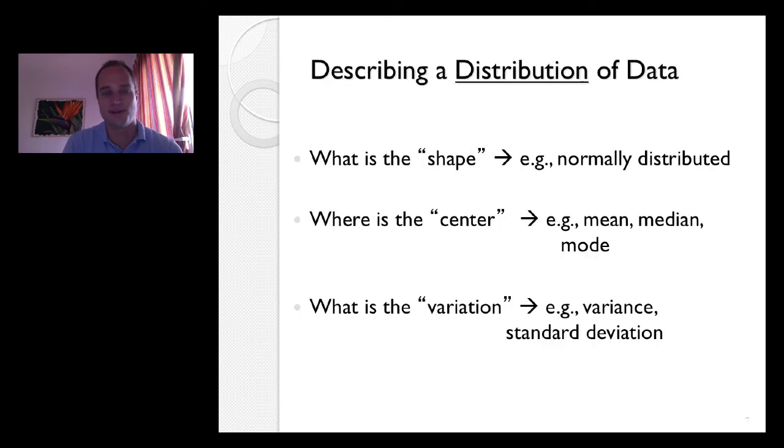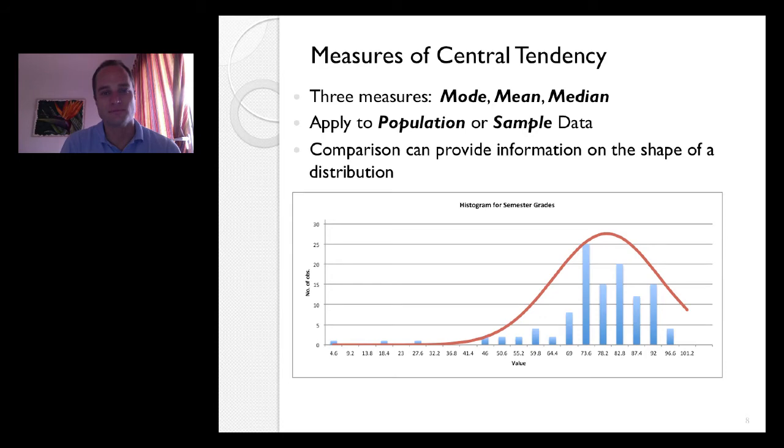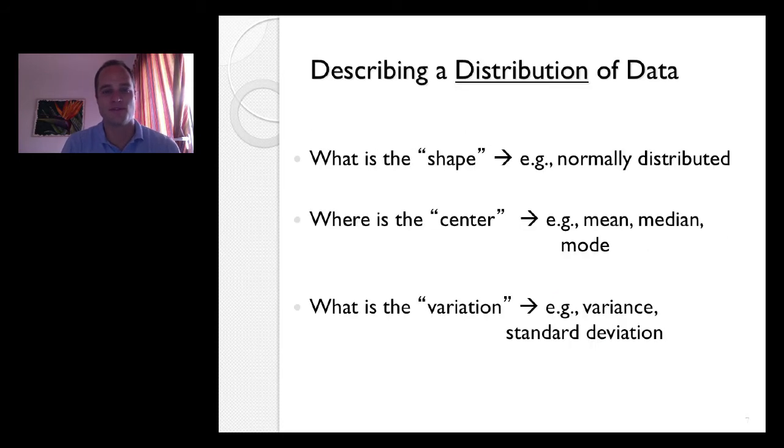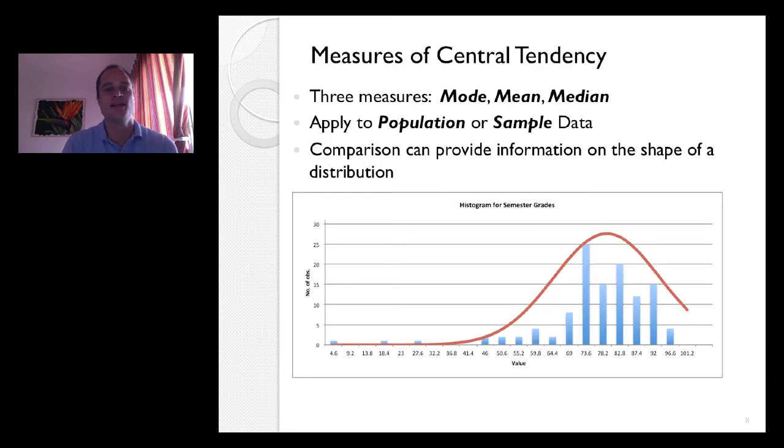So let's look a little bit at these three. Measures of central tendency first. So we're going to go to the second bullet point first. The mean, the mode, the median. These things apply to both population and sample data. So they apply to the 200 million Americans of the population and the 808 Americans in our sample from our previous slide.